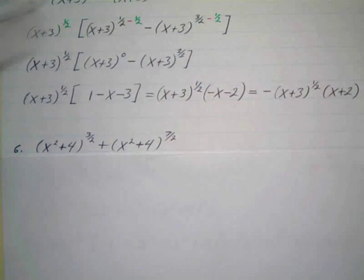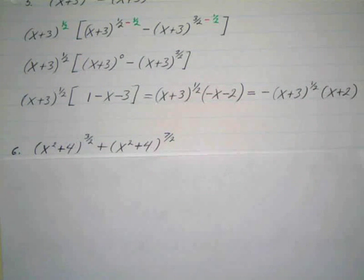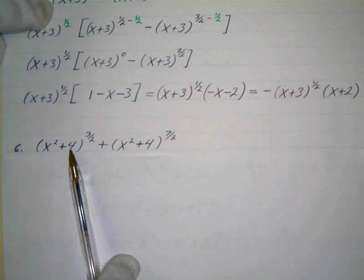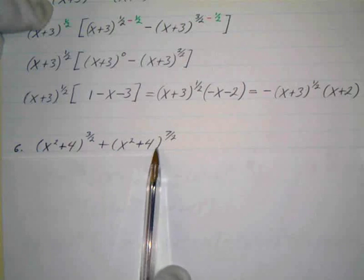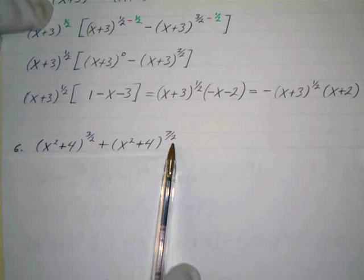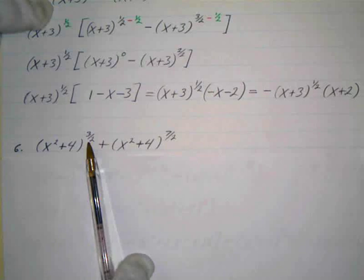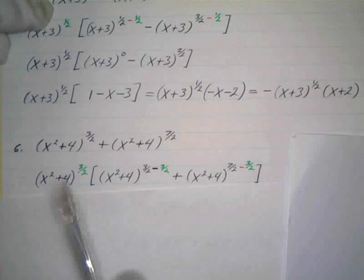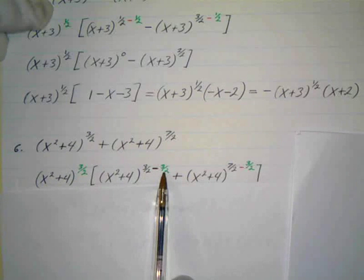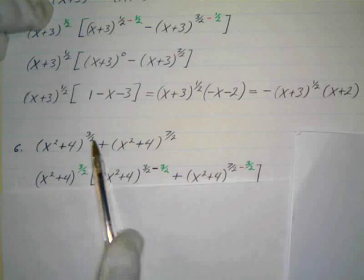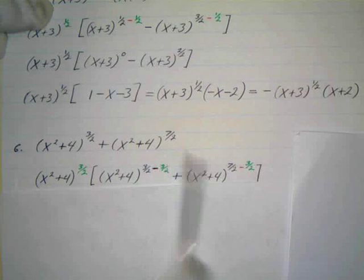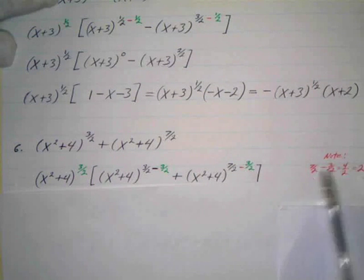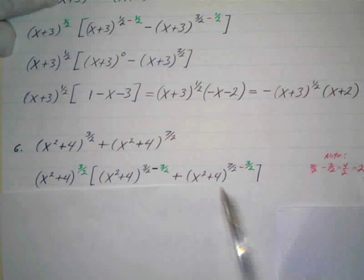Let's take a look at number six. Now we just have a common binomial factor. x squared plus four is our common binomial factor, and we have three-halves and seven-halves. Three-halves is smaller than seven-halves, so that's my least power — three-halves is what I'm going to factor out. For the first term: three-halves minus three-halves. For the second: seven-halves minus three-halves, which is four-halves, which is two.